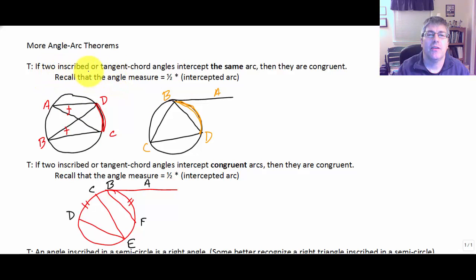We have a theorem that says if two inscribed angles or two tangent chord angles intercept the same arc, then those two angles will be congruent. That should totally make sense because we know that the formula for an inscribed angle is one-half of its intercepted arc. So two inscribed angles are intercepting the same arc and we use the same formula. It makes sense that those two angles would be congruent.